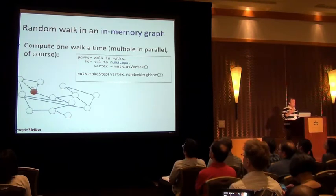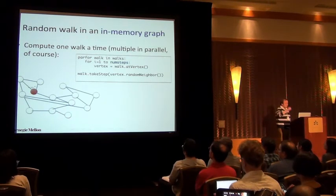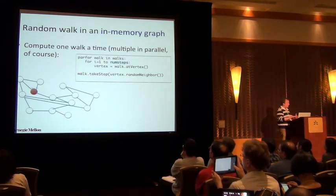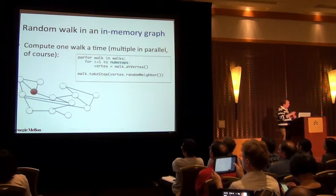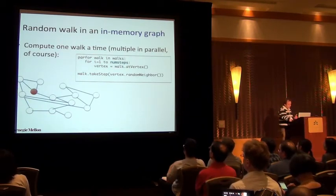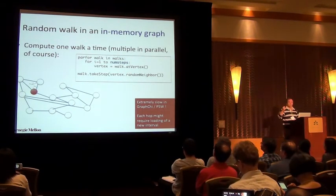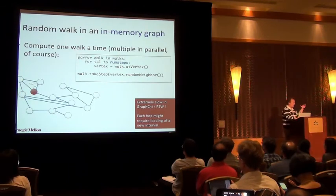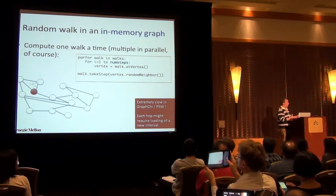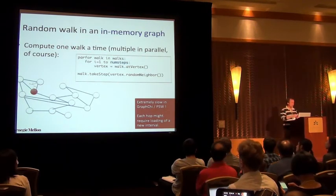So, how would you do random walk in an in-memory graph, such as GraphLab? Is that you just simply simulate one walk at a time or several walks in parallel. And you hope, when you simulate the walk, you need to hop around the graph. Well, this would be very slow on GraphChi, because each hop on the graph could require loading a whole shard from the disk. It would be also slow in many distributed systems, because each hop could require a hop over the network to the different graph partition.